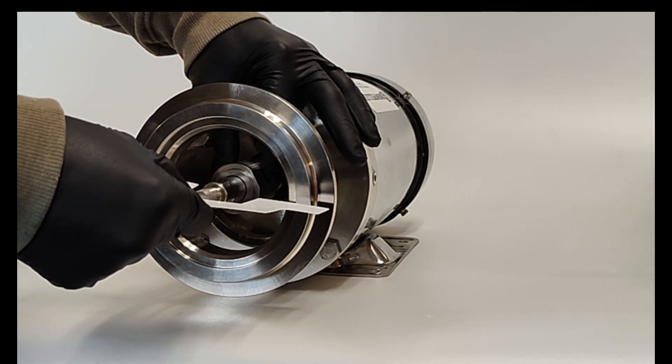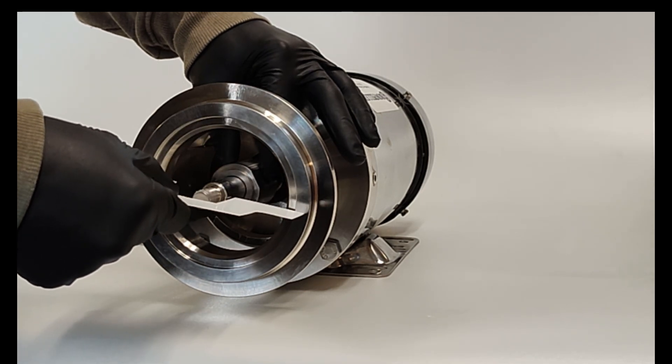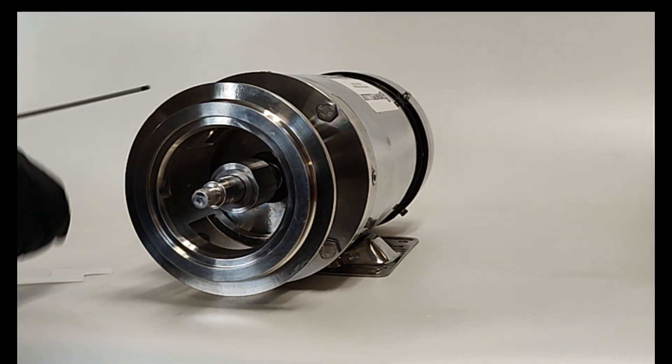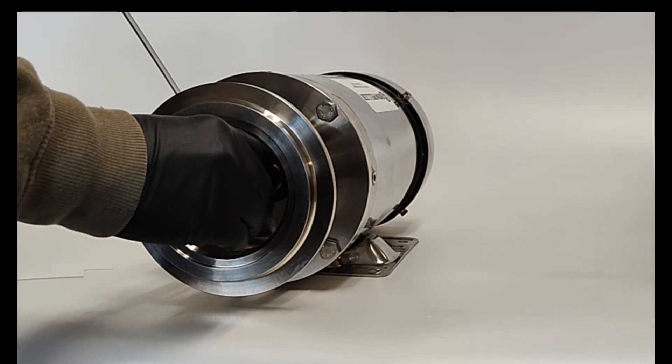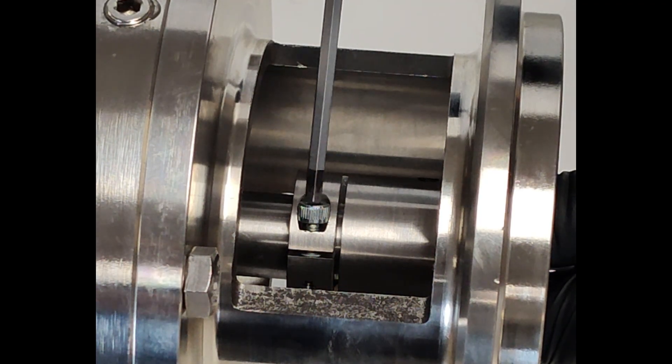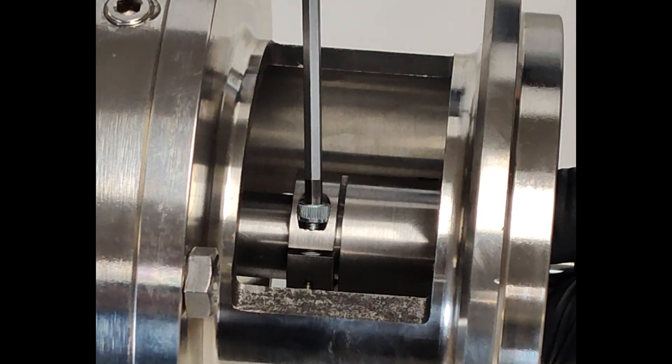Use the provided plastic assembly gauge to set the pump shaft height. This critical step will establish the internal pump clearances and require no further adjustment. Secure the pump shaft by tightening the bolt.